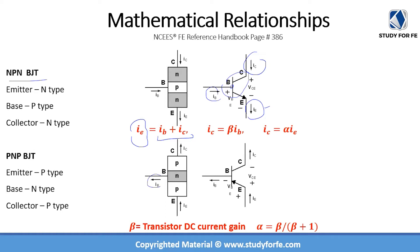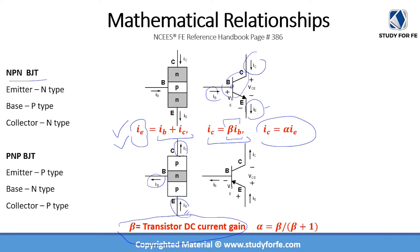For PNP, the base current and collector current are leaving but IE is entering, so IE equals IB plus IC. It is a property of the BJT that IC equals beta times IB, where beta is the DC current gain — it is a property of the transistor and will be provided in the question. The relationship between IC and IE is IC equals alpha times IE, where alpha equals beta divided by beta plus one. If you know beta, you can figure out alpha and all current relationships.